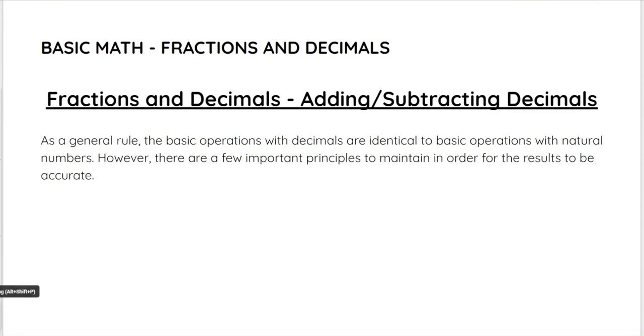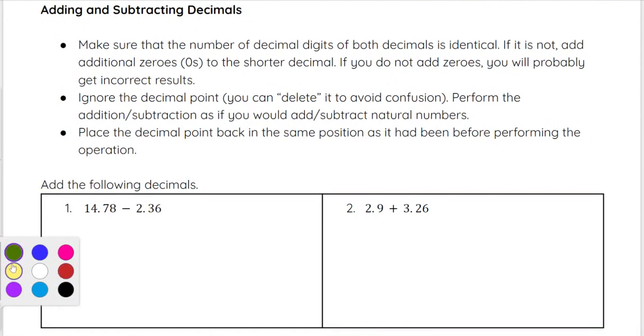So let's take a look at some examples here. To start, we have 14.78 minus 2.36. What we want to do anytime we are adding or subtracting decimals is to make sure that the number of decimal digits in each decimal is identical. We want to make sure that the number of decimal digits, meaning the number of numbers after the decimal point, is the same in our two numbers. Now we see 7.8 and 3.6, so there's two decimal digits here and here. So that is good to go.